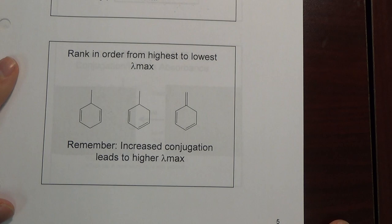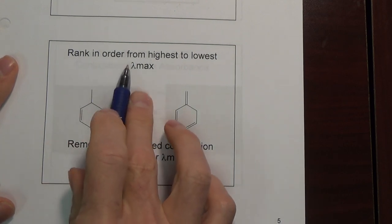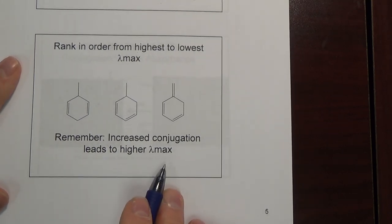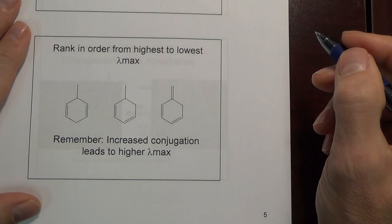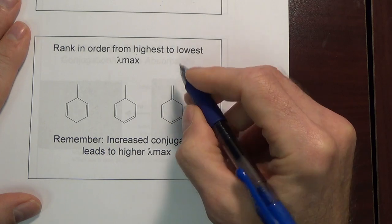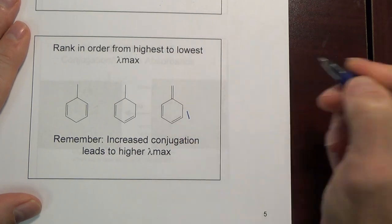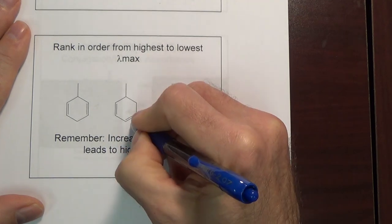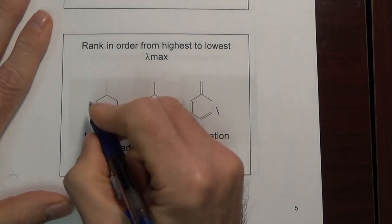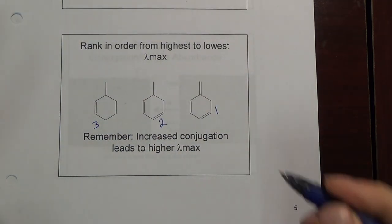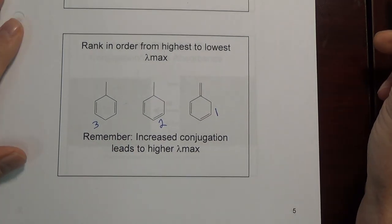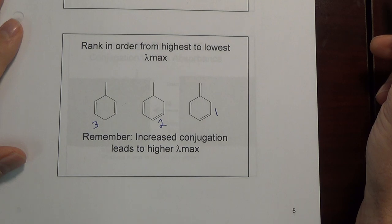Let's see if we can answer this straightforward question: rank in order from highest to lowest lambda max. Remember, increased conjugation leads to higher lambda max. You have three double bonds conjugated — that should be highest. Two double bonds conjugated — that should be next. And then two double bonds that are not conjugated — that should be lowest. Highest, middle, lowest.